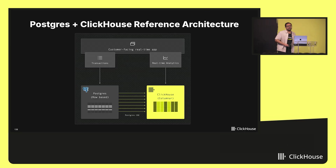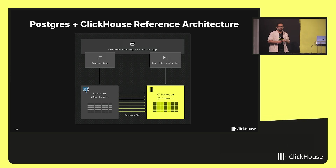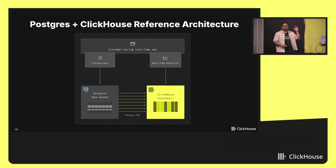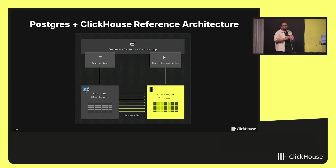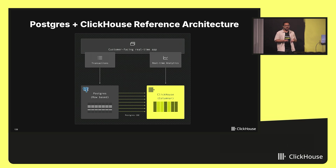To summarize the reference architecture we covered: you have Postgres powering transactions — creating, updating, showing listings — and you have ClickHouse powering real-time analytics, like comparing house prices across a given area. And you have the Postgres CDC connector, which reliably replicates terabytes of transactions from Postgres to ClickHouse and makes them analytics-ready. Basically, you're using the right tool for the right job: Postgres for transactions and ClickHouse for analytics.